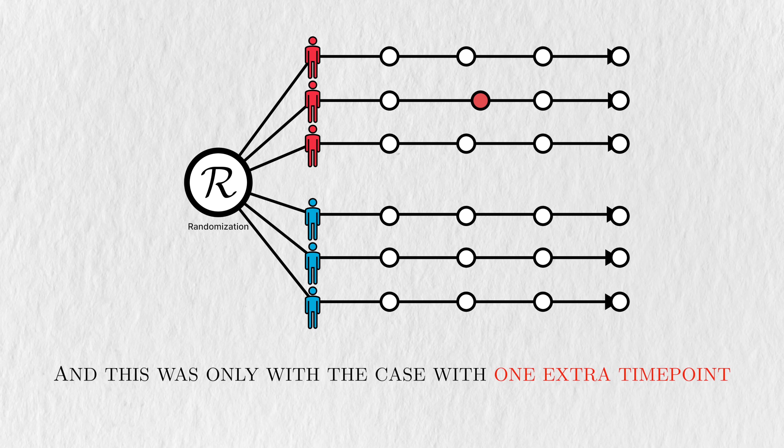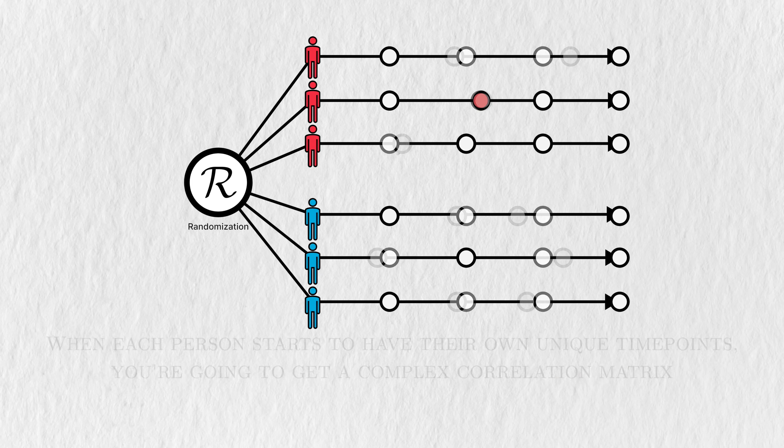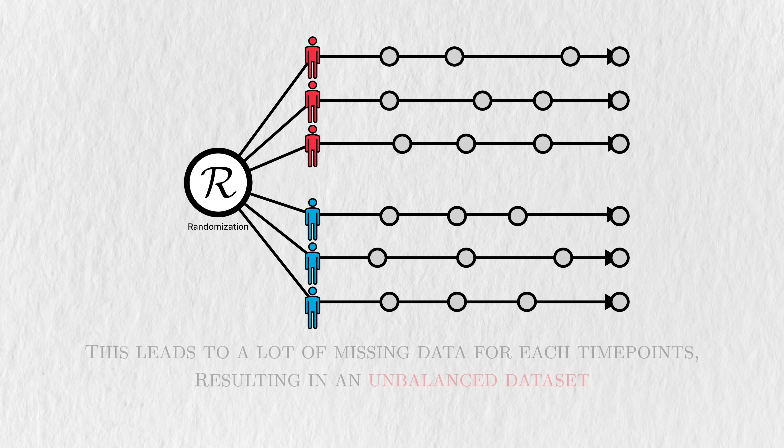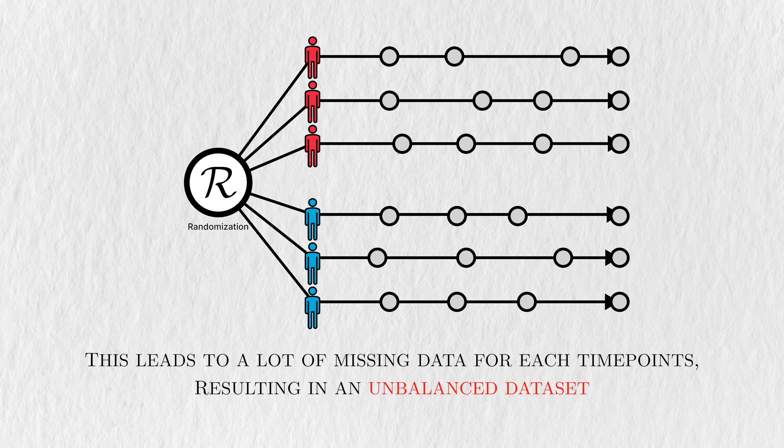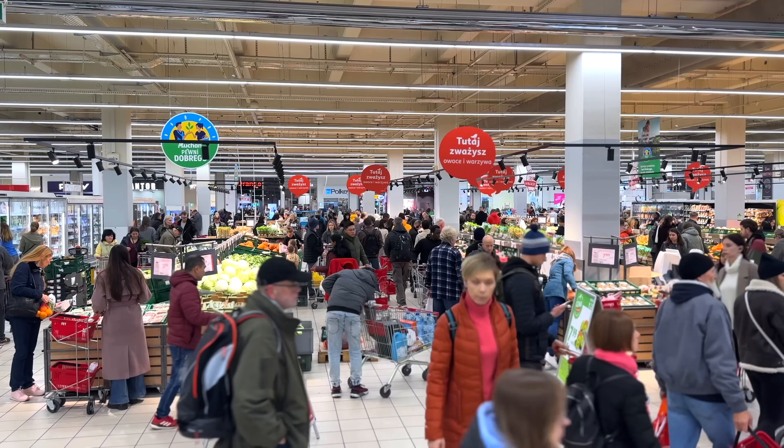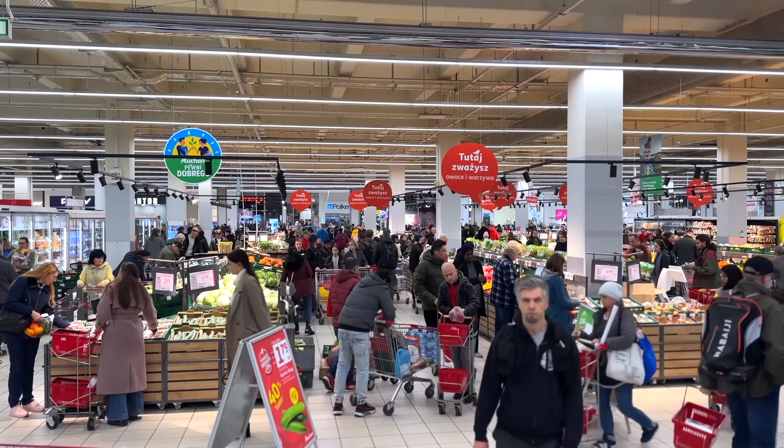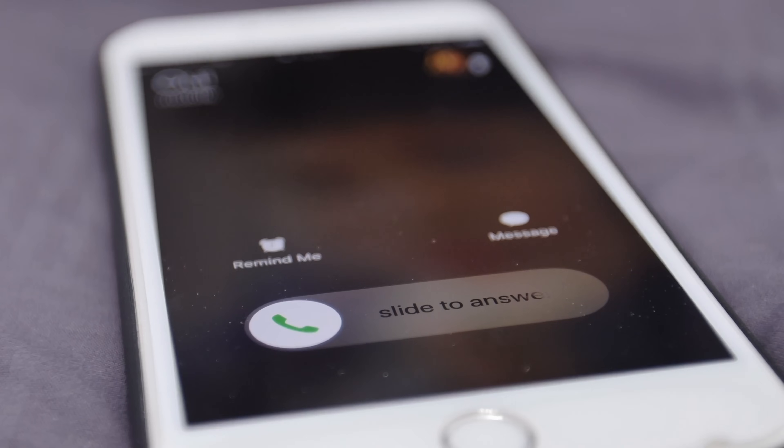And we've only considered the case where just one extra time point. When each person starts to get their own unique time points, you're going to get a very complicated correlation matrix. This results in a lot of missing data for each time point, resulting in what we call an unbalanced data set. I use this example to highlight how statistical models can clash with the reality of people just living their lives. Something as banal as a missed appointment can complicate the analysis.